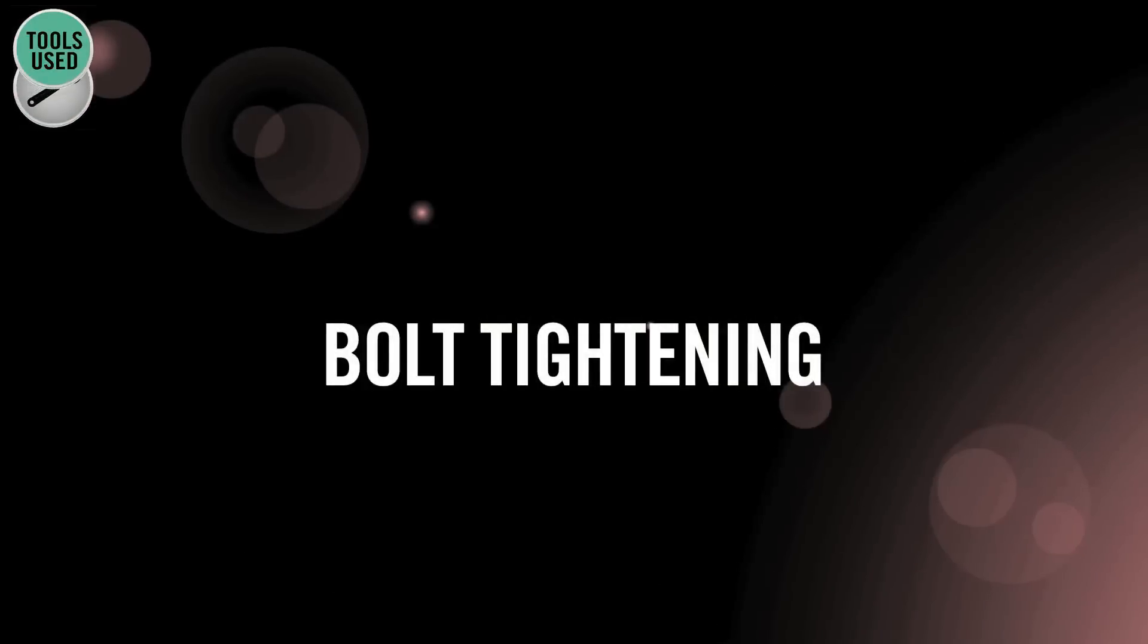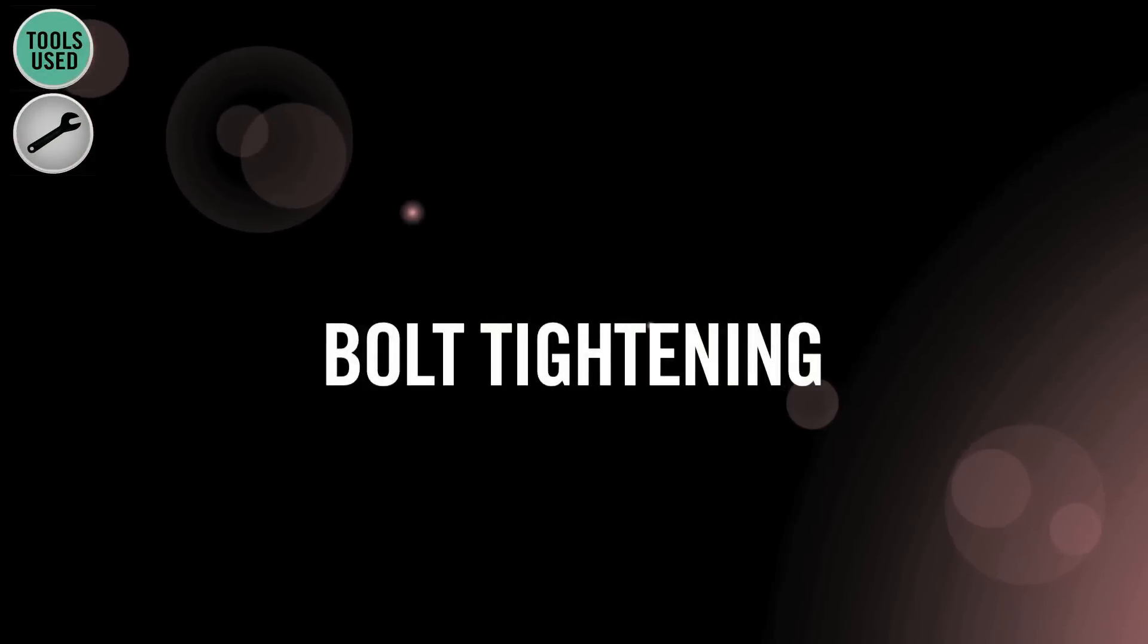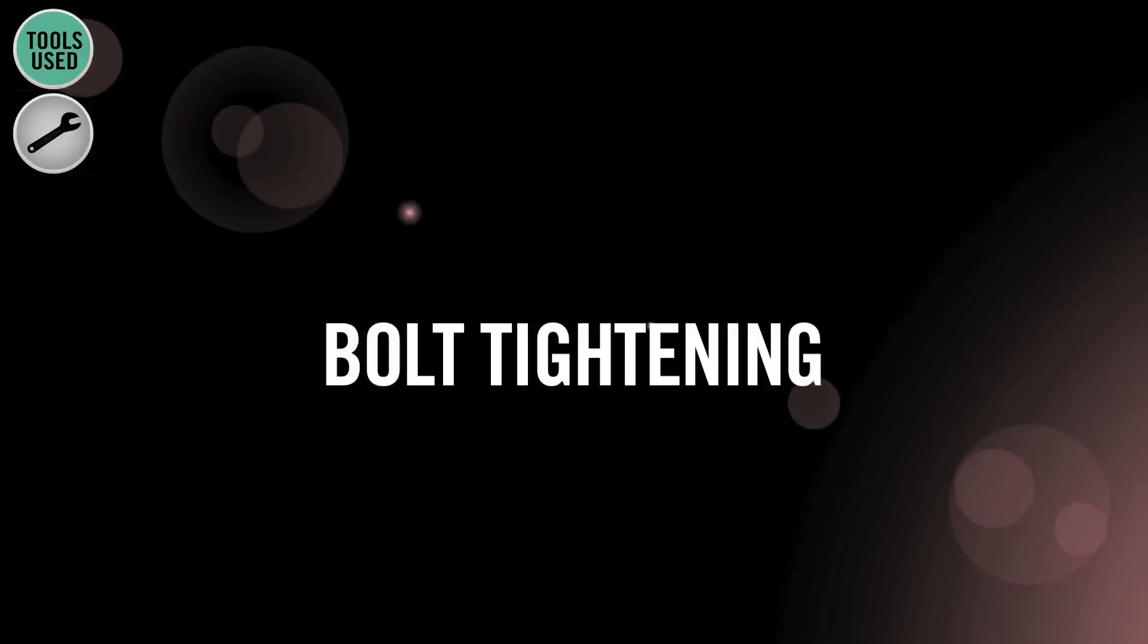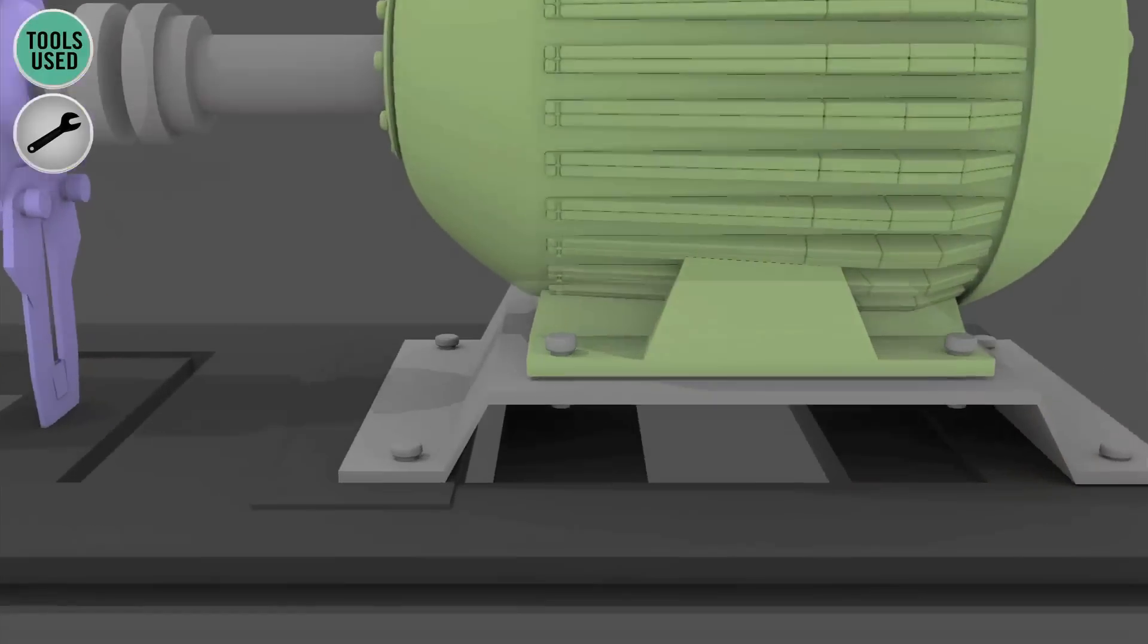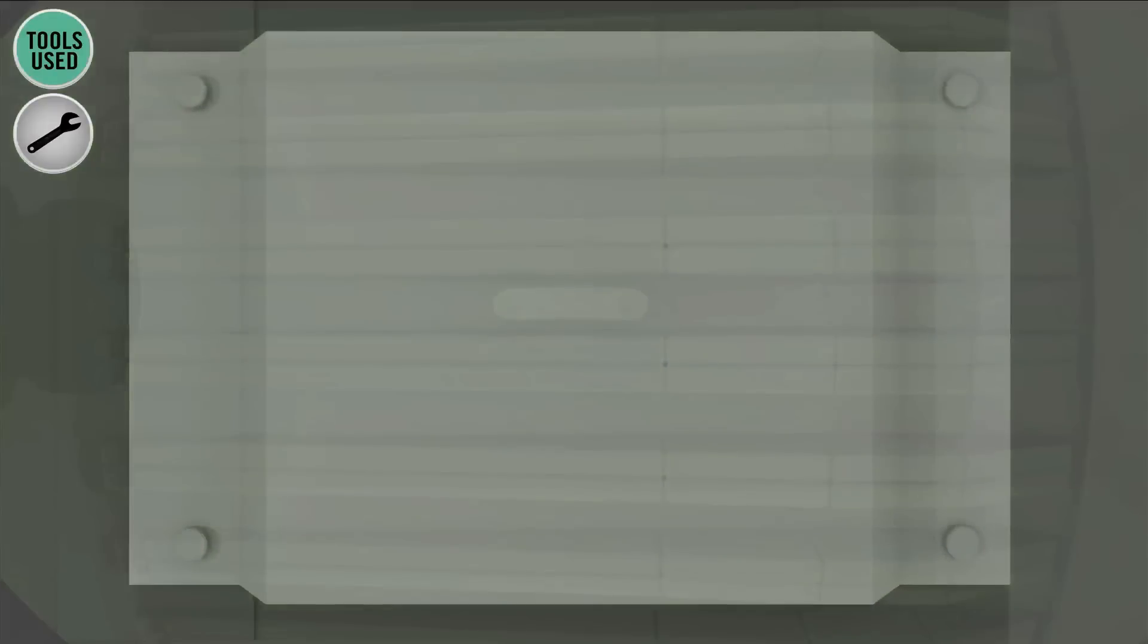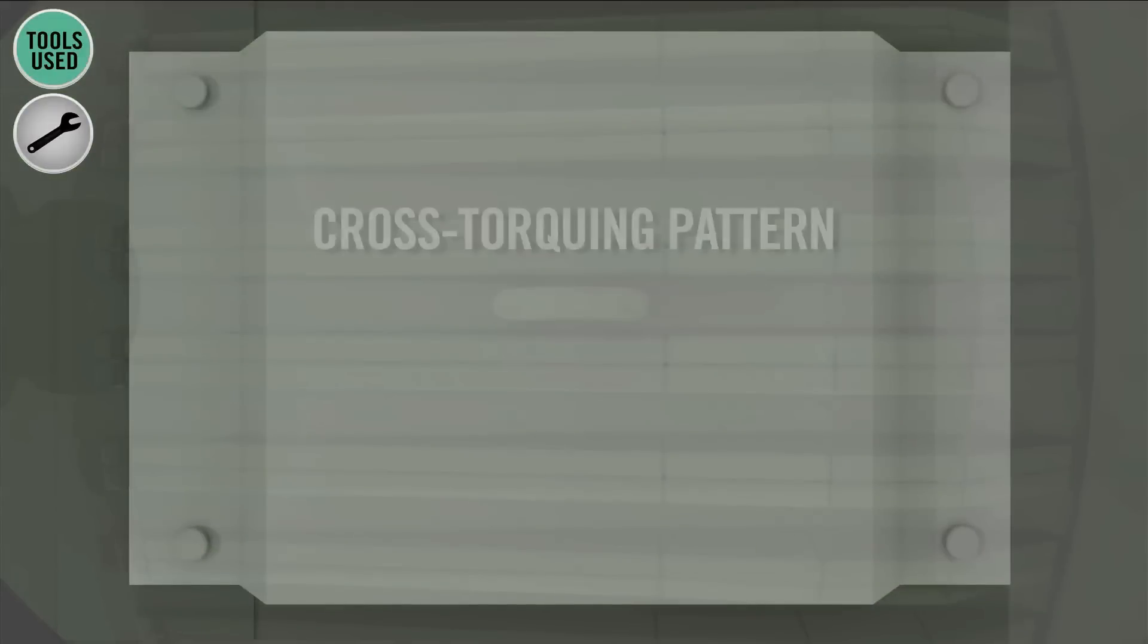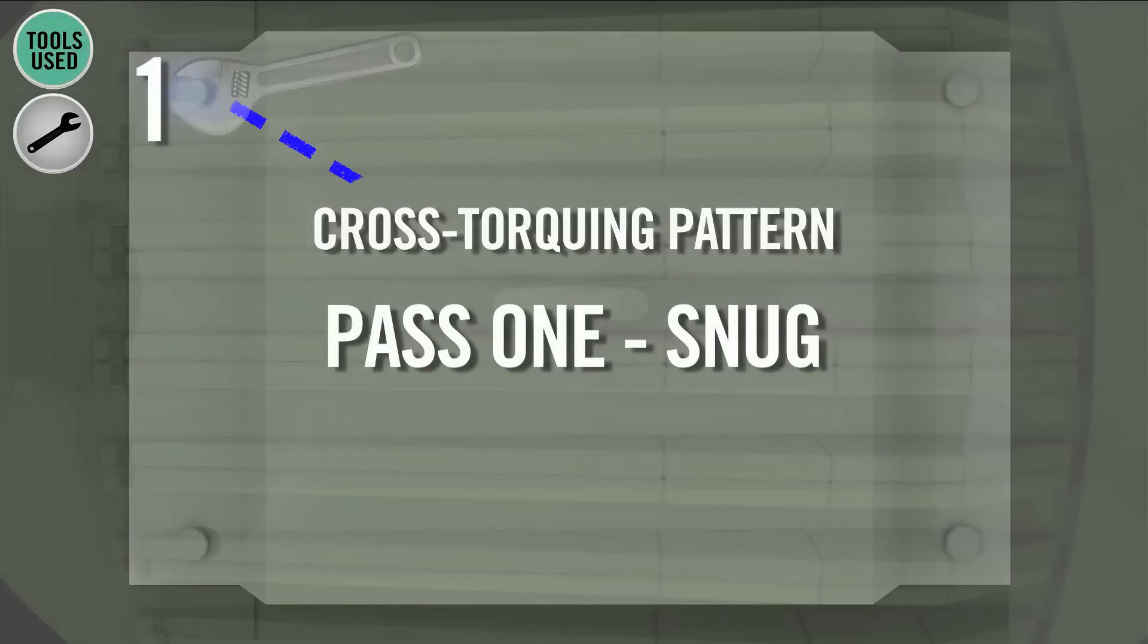Next, you want to tighten the bolts down and we have a specific method for this. Most people are too aggressive with this part, so it's important that you bolt the movable machine down the same way every time. We recommend a cross torquing pattern to help us remember this. We also recommend making at least two or three passes in sequence.